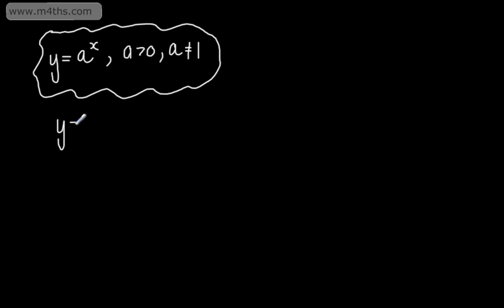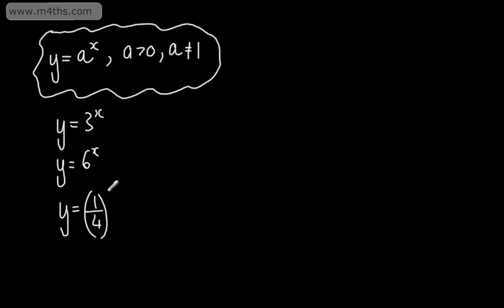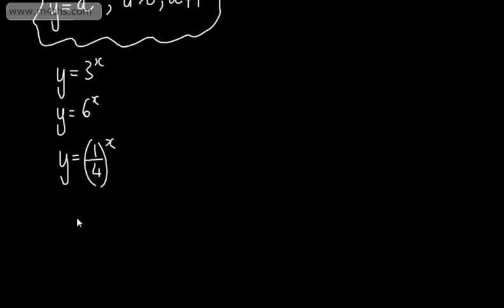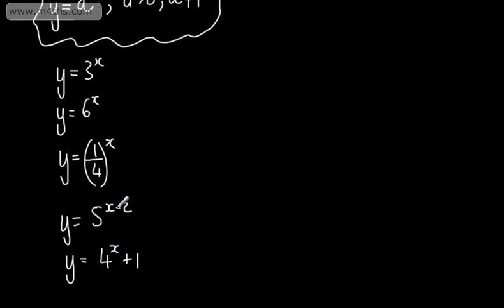Examples might be y = 3^x, y = 6^x, or y = (1/4)^x. We could also see a range of graph transformations, such as y = 5^(x−2) or y = 4^(x+1). What we're going to do is look at the general shape of these graphs, the equation of the asymptote, and some basic transformations.